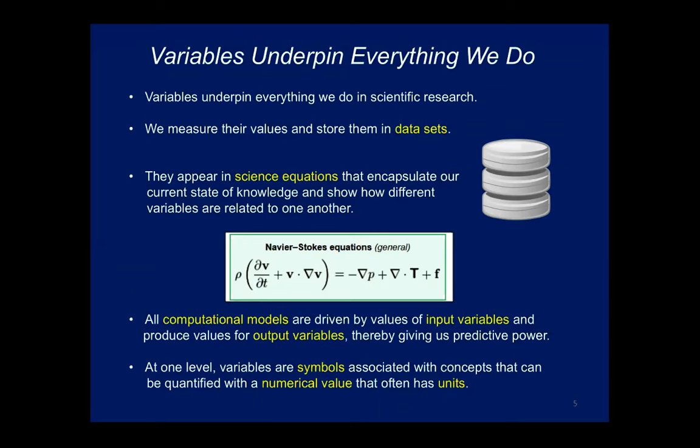Variables appear as the stars in those equations. Our computational models are ingesting input variables from either a file or another model and producing output variables. When I say variables I really mean the values of those variables — the variables are the abstraction, the symbol; the values are the things stored in the file or passed out of RAM.